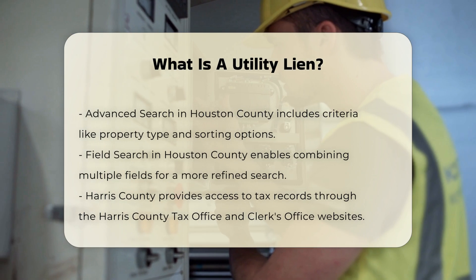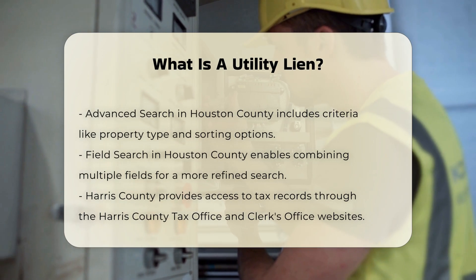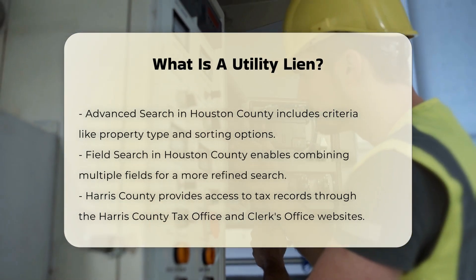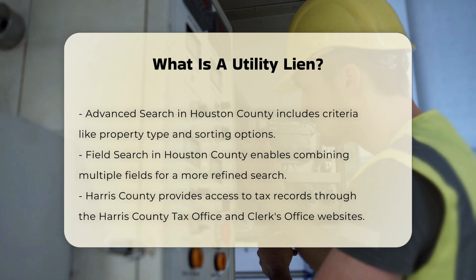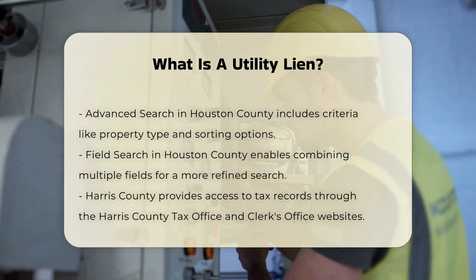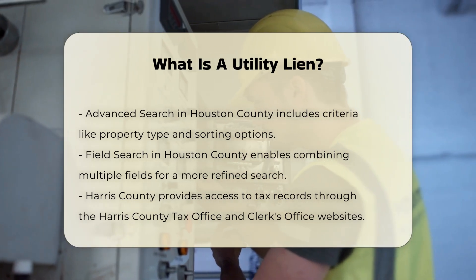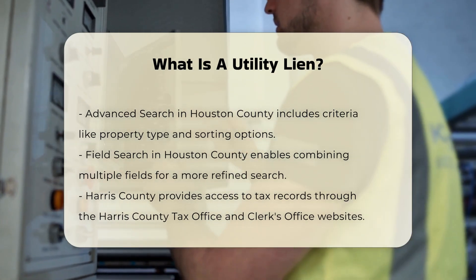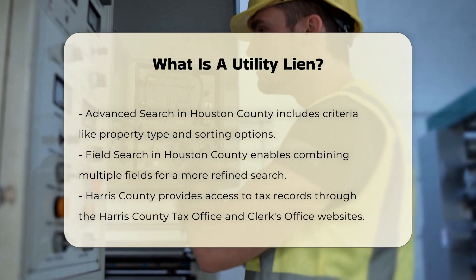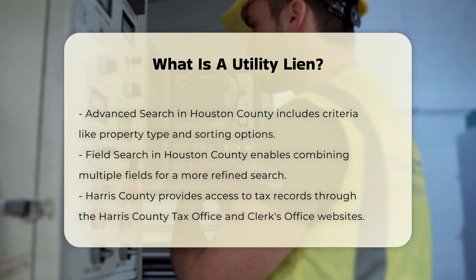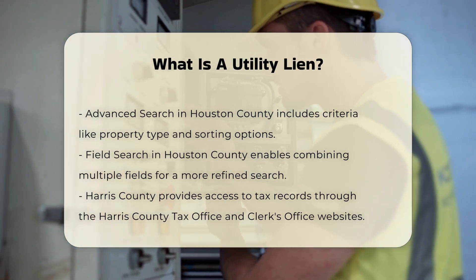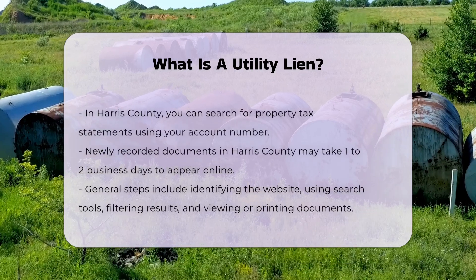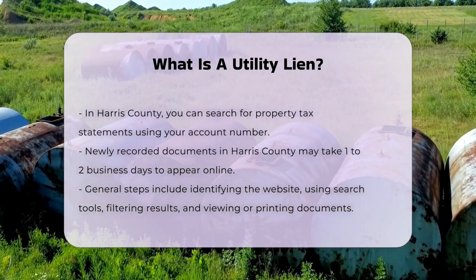How does a utility lien work? Once a utility lien is filed, it becomes a legal claim against the property, ensuring that the debt is not ignored or forgotten. The lien is recorded in the Office of the County Recorder in the county where the property is located and remains until the fees are paid. This lien is subject to and inferior to the lien for general taxes and all prior recorded mortgages and encumbrances of record.